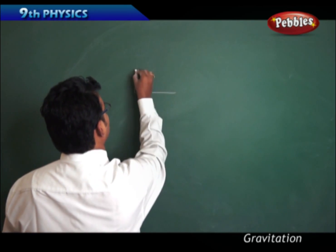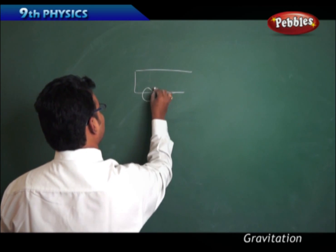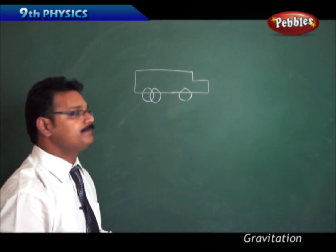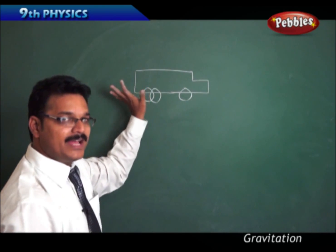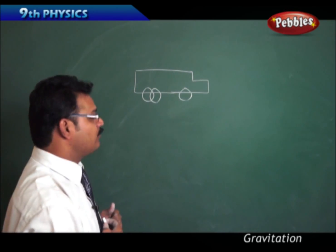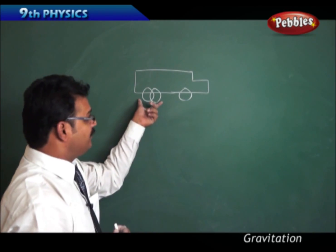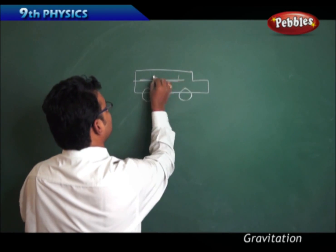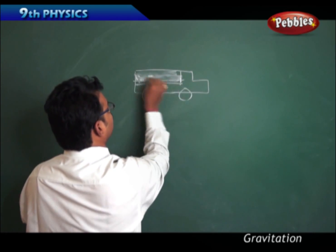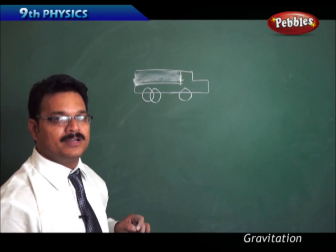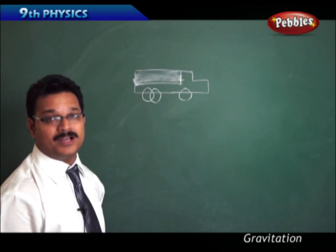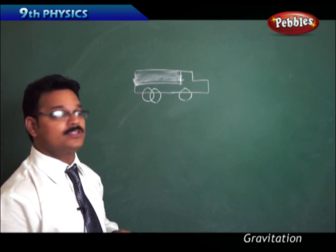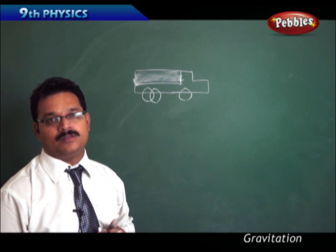There is a truck — a very big loaded truck. The truck has weight, which means it has the weight of its wheels, the front part, the back part, and anything loaded inside. So the weight of the truck is nothing but the weight of the wheels plus the front part plus the back part plus the material it is carrying. That total weight is the weight of the truck.